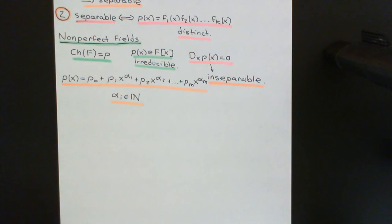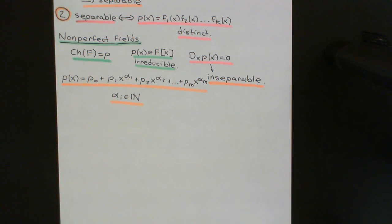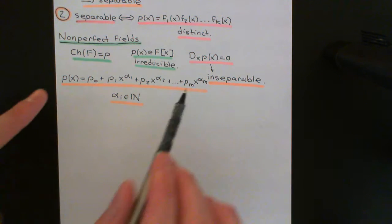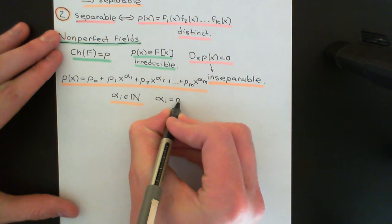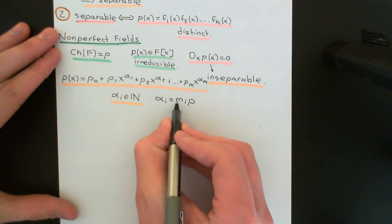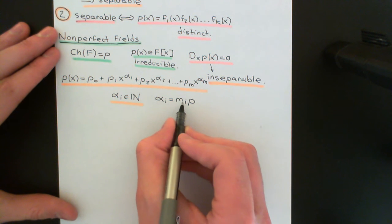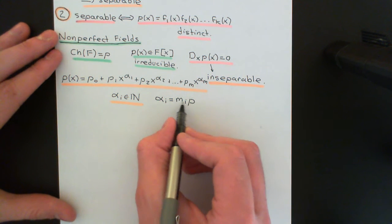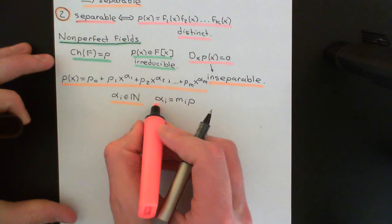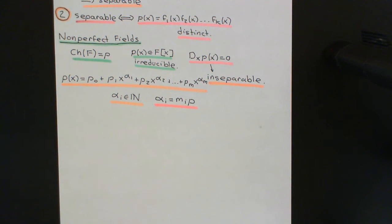When you take the derivative, you multiply by the old power, and of course that old power is going to be equal to zero because it's a multiple of p. So here is our polynomial, and what I can conclude is that all of the α_i's are some mᵢ times p. Note it might be the case that some of them actually have a larger power of p in their prime factorization. All I'm saying is that every single one of them has to have at least one factor of p in it.